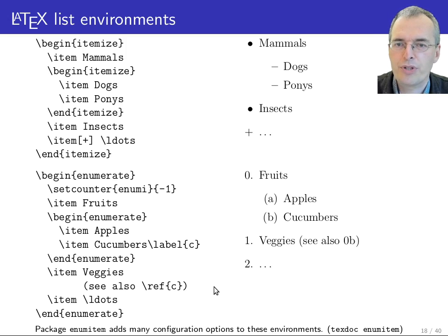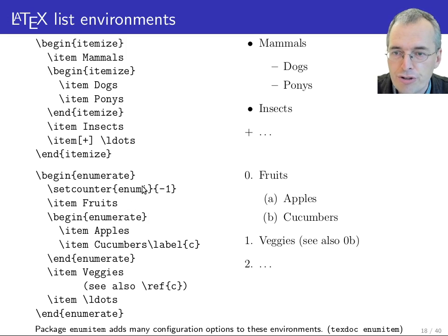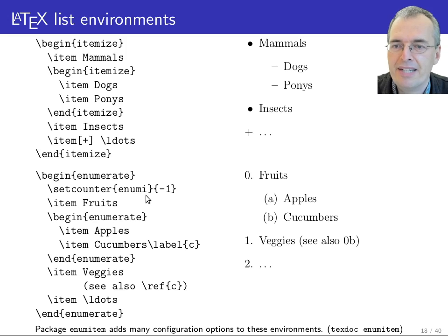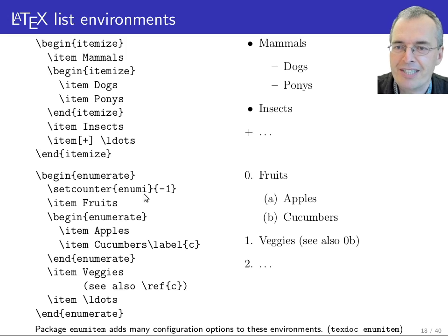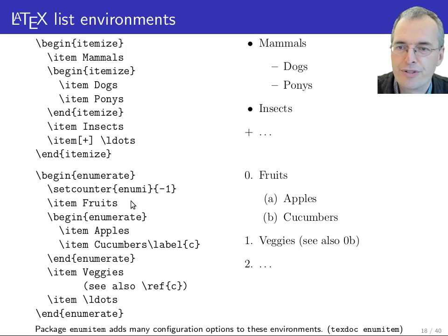Sometimes you want to overwrite the enumeration sequence. LaTeX has variables called counters, and the first level of an enumeration item is called enum i — a Roman numeral used to work around the fact that variable names cannot end with a digit. To start the enumeration at 0 rather than 1, you reduce the enum i counter variable by minus 1.